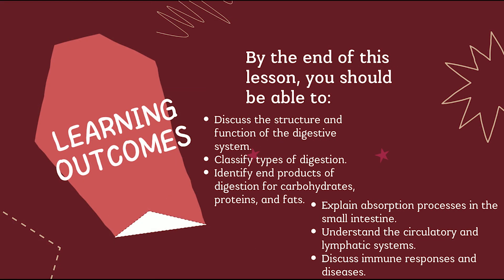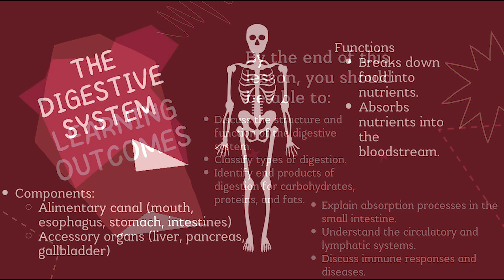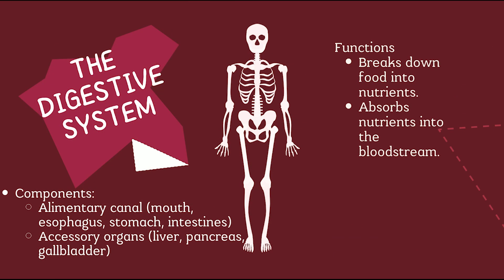By the end of this unit, you should be able to: describe how food is digested and absorbed, identify key parts of the circulatory and breathing system, understand how waste is excreted from the body, recognize how your immune system protects you, and appreciate the contributions of Ethiopian physicians. Let's start with the digestive system — the body's fuel processor.